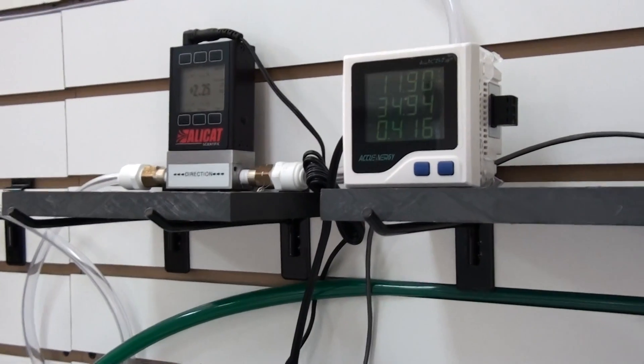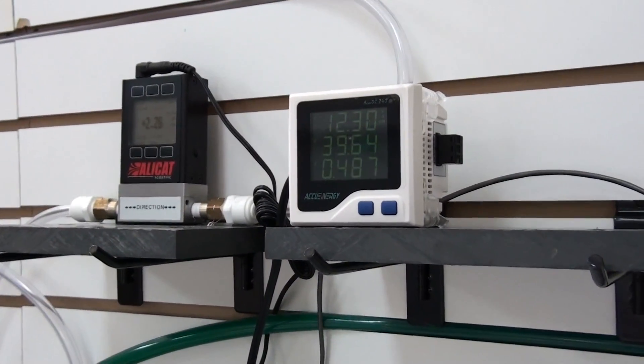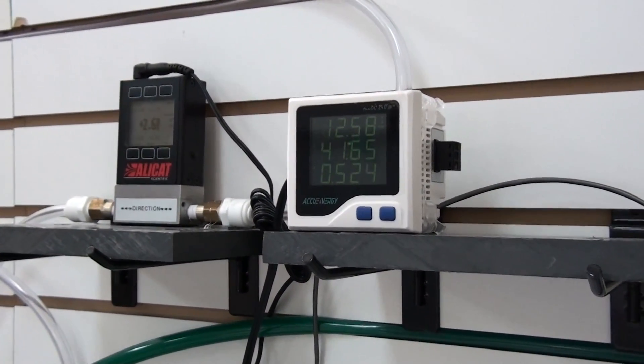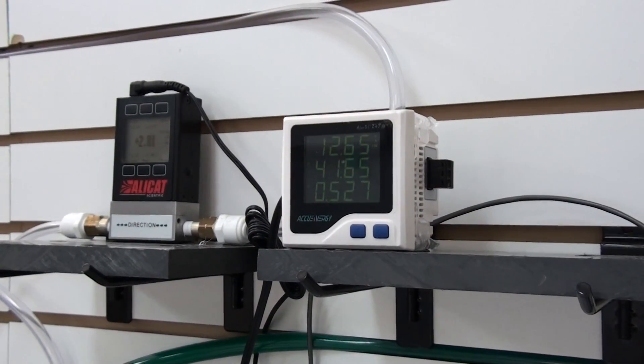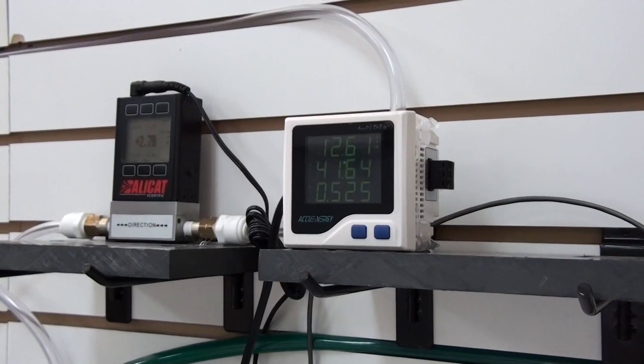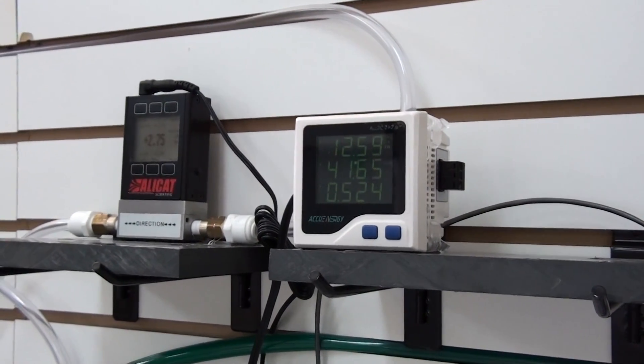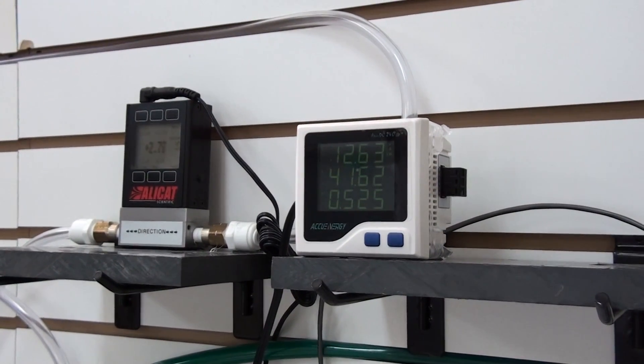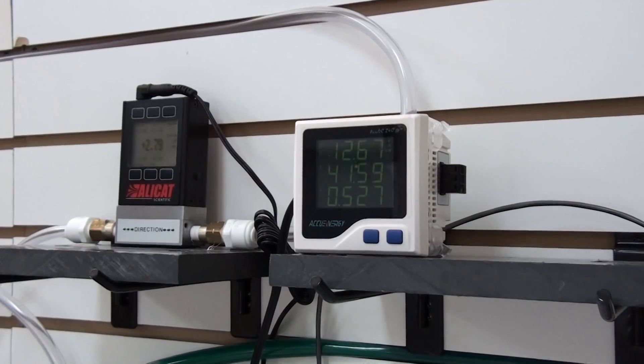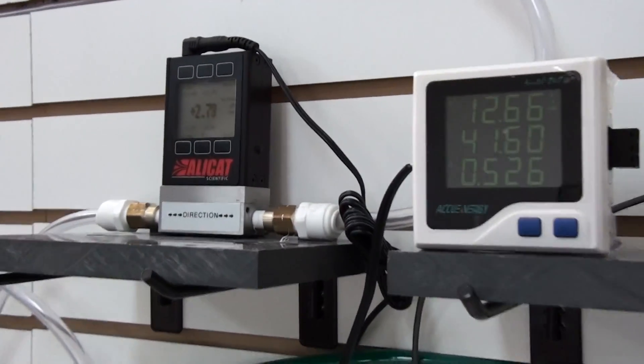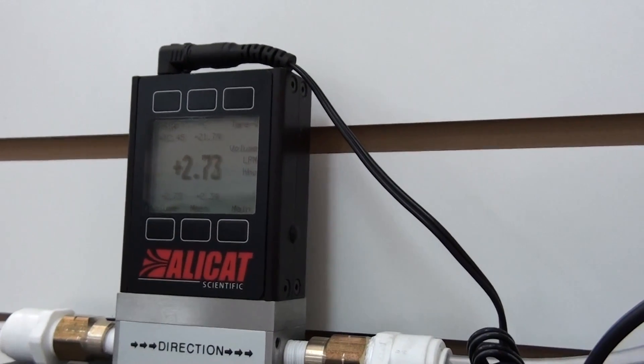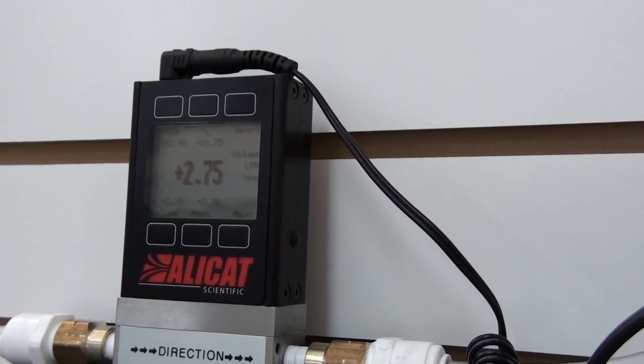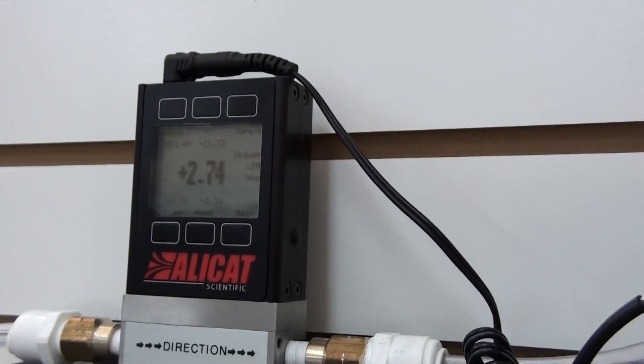So we'll go ahead and turn this up, and we'll see what kind of production it'll make with this PWM. So at max output, it looks like it's right under 42 amps and about 2.75 liters per minute.